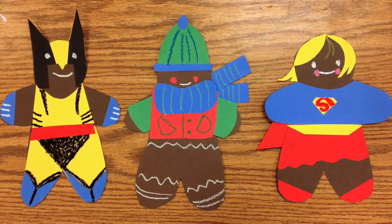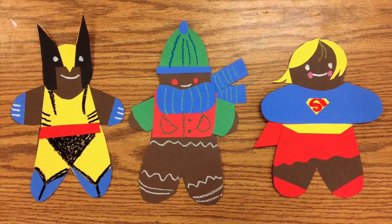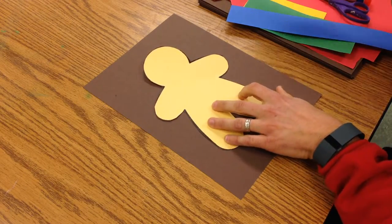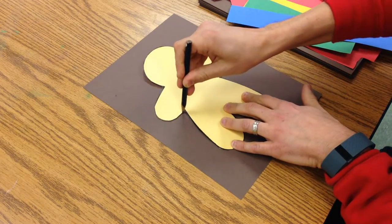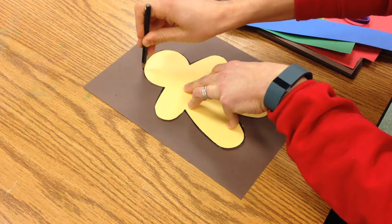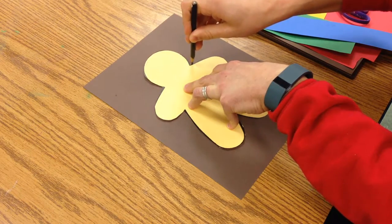We're going to make a simple little gingerbread cookie out of construction paper. You're going to take a template and trace around the outside of that. Just hold your hand in the middle or you can have a neighbor help you out with that.